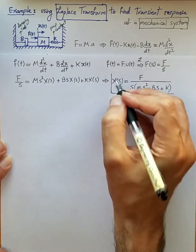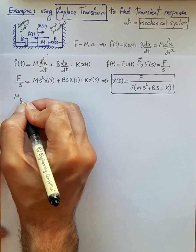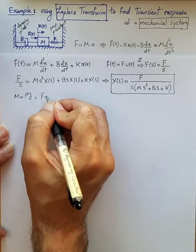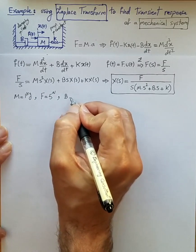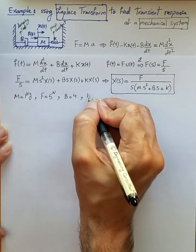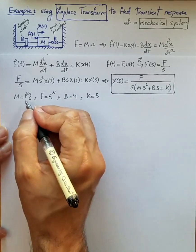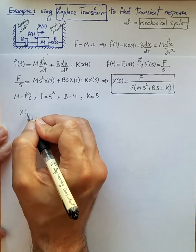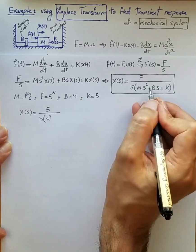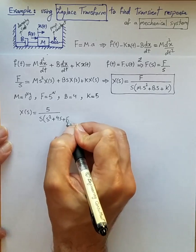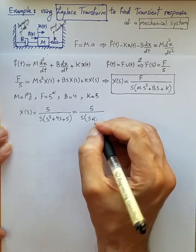This is our transfer function for displacement in the s-domain. Let's substitute numerical values: mass m = 1 kg, applied force f = 5 N, damping coefficient b = 4, and spring proportionality constant k = 5. Substituting, we get X(s) = 5 / [s·(s² + 4s + 5)], which can be rewritten as 5 / [s·(s+2)²+1)].